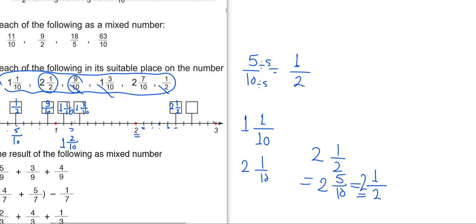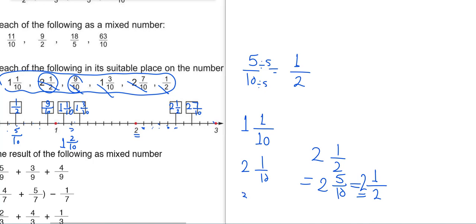Continuing: 2 and 6 over 10, 2 and 7 over 10, 2 and 8 over 10, 2 and 9 over 10. Then 3 and 10 over 10 — but 10 over 10 equals 1, so this gives us 3.